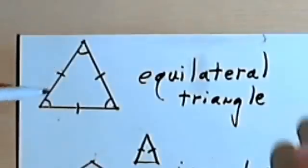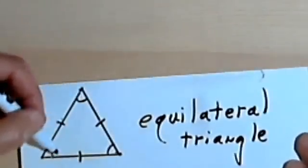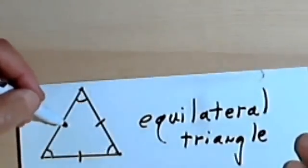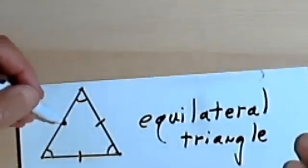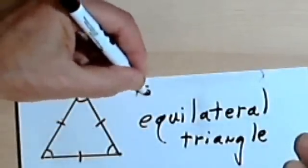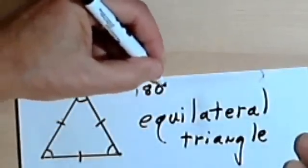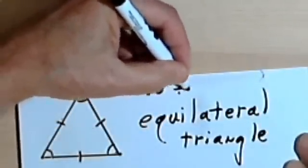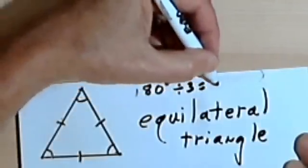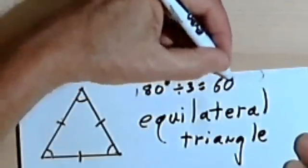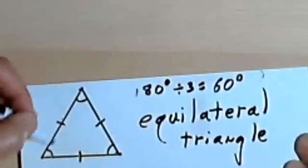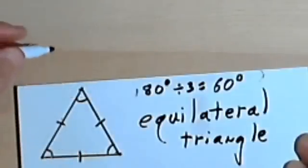One more thing about the equilateral triangle. Since we know that the three angles have to add up to 180 degrees, and the three angles are the same size, then we could divide 180 degrees by three and find out that each of the angles is 60 degrees. So each of these angles is 60 degrees.